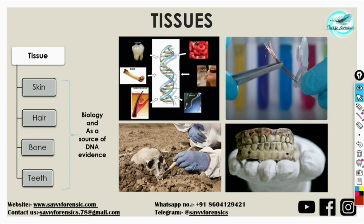Now, what are tissues? Tissues are basically the group of cells with similar shape and function. In simple language, when a group of cells have similar structure and combine to perform a common function, they are called tissues. There are many types of tissues which are epithelial, muscular, connective and nervous.